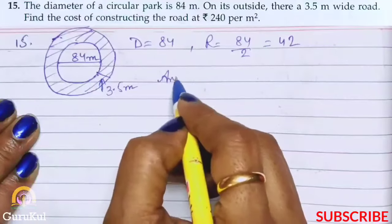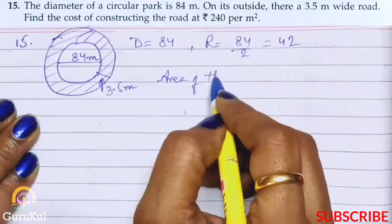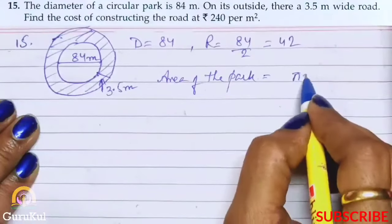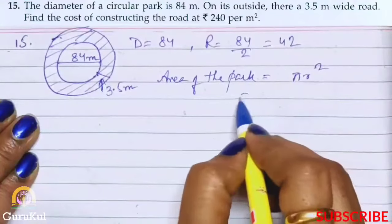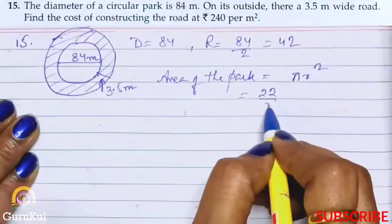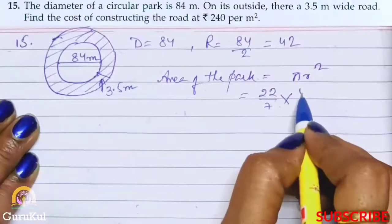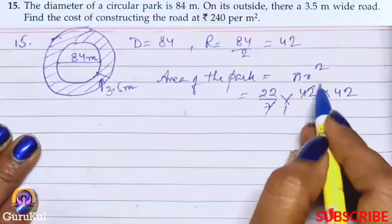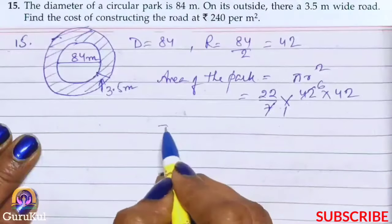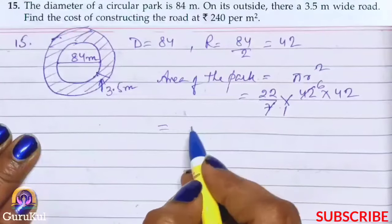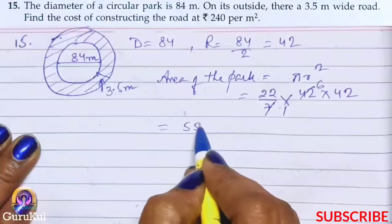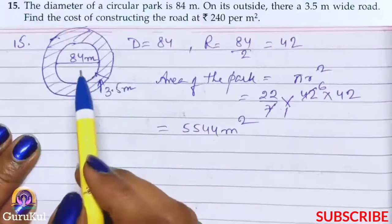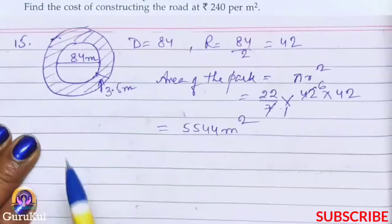So area of the park, which is πr², that is 22 by 7 into 42 into 42. Seven ones are, seven sixes are. After multiplying, our answer is 5544 meter square. So actual park's area is calculated. Now let's move ahead.